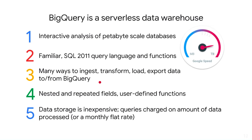Usually, tables in BigQuery are in denormalized form — in other words, they're flat. But BigQuery also supports nested and repeated fields, and this is why it can support, for example, JSON.